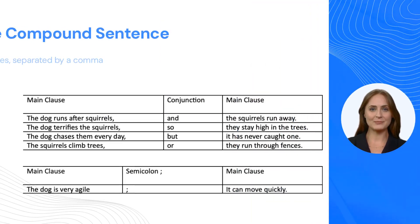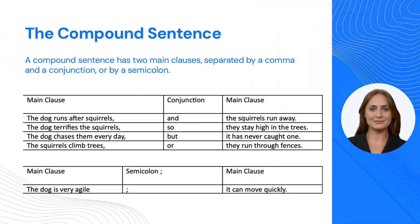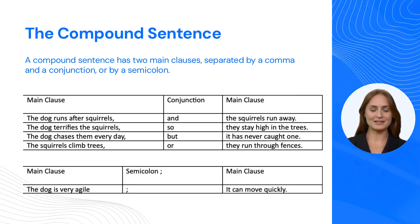The compound sentence. A compound sentence has two main clauses, separated by a comma and a conjunction or by a semicolon. Main clause, conjunction, main clause: The dog runs after the squirrels, and the squirrels run away.